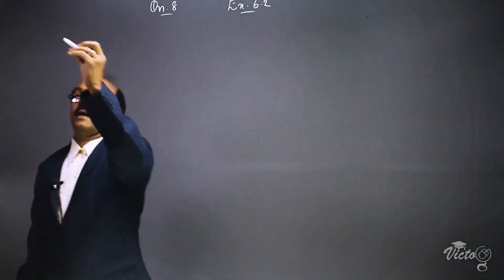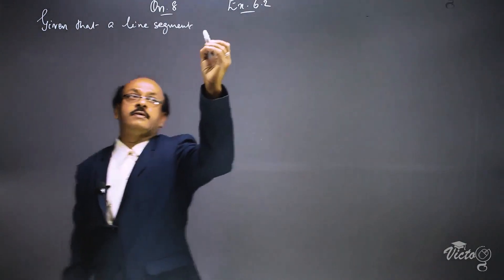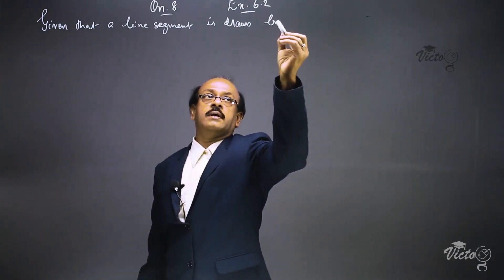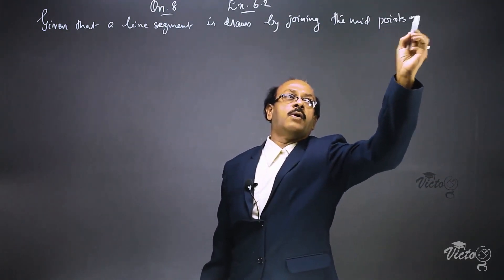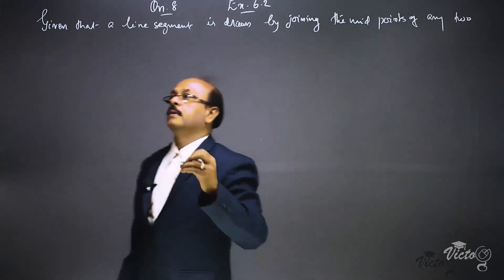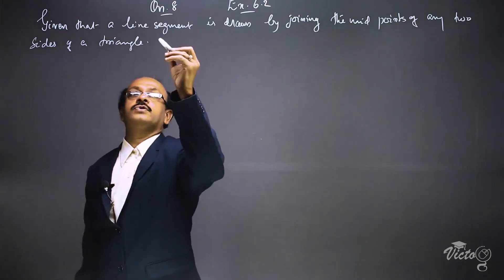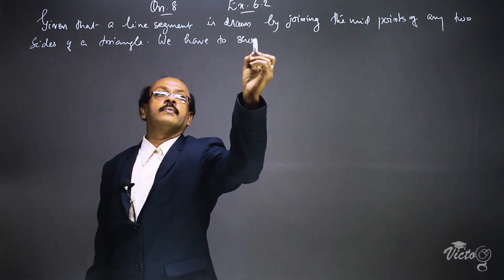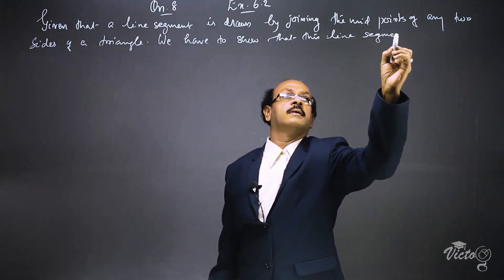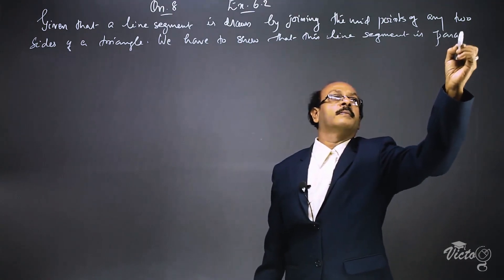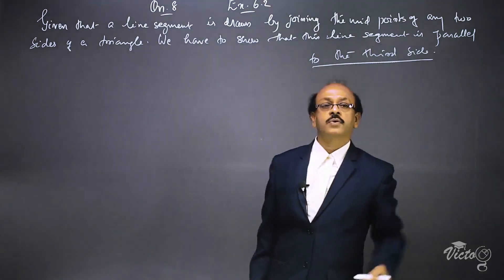Given that a line segment is drawn by joining the midpoints of any two sides of a triangle, we have to show that this line segment is parallel to the third side. For that, we have to draw a rough sketch.